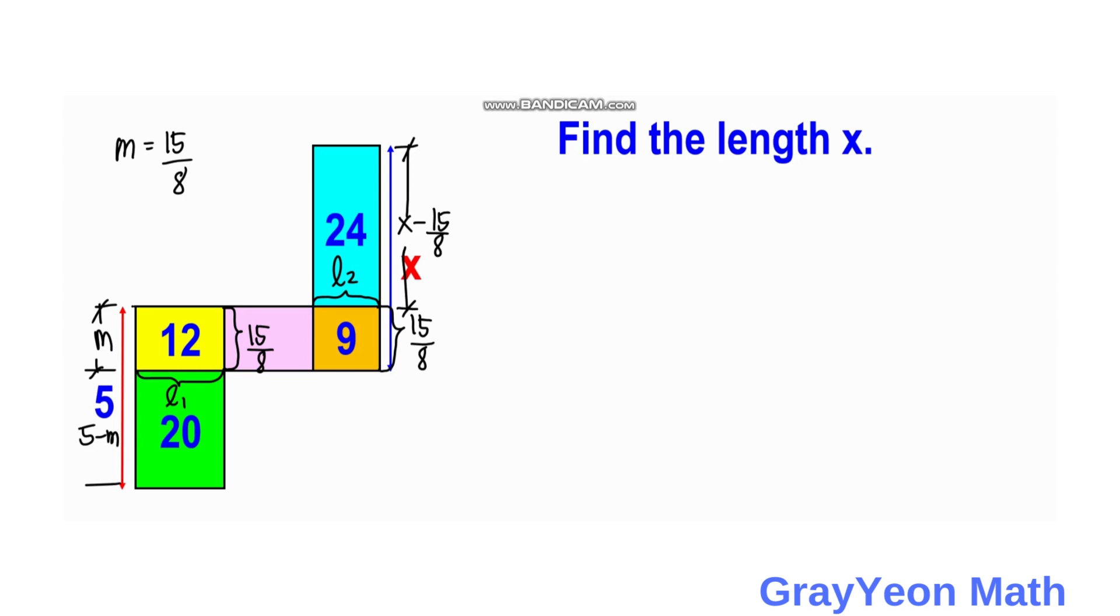So next thing is we need to notice that L2, the common length is equal to the area of any of these two rectangles. For instance, for instance is 24, divided by the width, which is X minus 15 over 8, equal to 9, which is the area, all over 15 over 8.